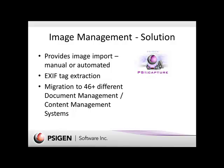What SciGen brings to the table is the ability to import — either through a manual or an automated process — those images, pull them in, extract all the information including the geographic location, and then migrate that to 46 different document management or content management systems. We can also take that data and put it into a database. So if you're using ArcGIS or one of the other Esri products, you can take that information, geocode it, and post it into a map to analyze the data.